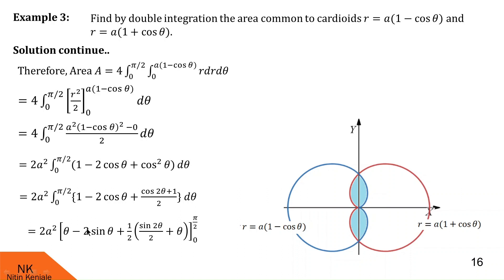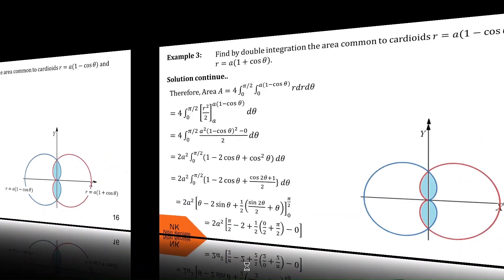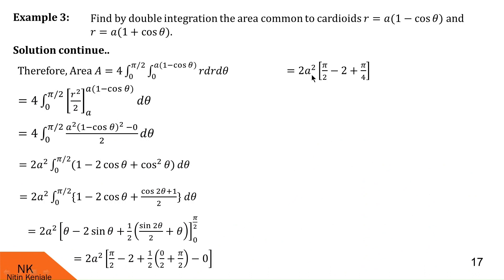Integrating term by term: integration of 1 is θ, integration of 2cosθ is 2sinθ, and with 1/2 outside, cos 2θ integrates to sin 2θ/2 and 1 integrates to θ, over the limit 0 to π/2. Substituting the upper limit π/2: we get π/2 − 2(1) + (1/2)(0 + π/2). Substituting the lower limit 0, all terms become 0. Simplifying: 2a² × (π/2 − 2 + π/4) = 2a²(3π/4 − 2). This is the area of the region bounded by the cardioids r = a(1 − cosθ) and r = a(1 + cosθ).